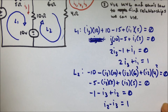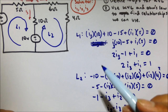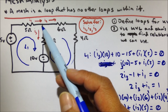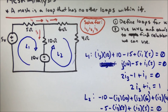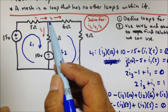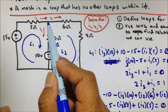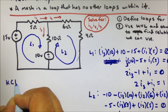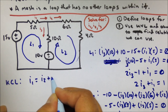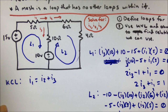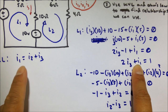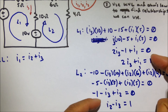We have another relationship we can use besides these two KVL loop equations — we also have Kirchhoff's current law. We can come up with a relationship between the three currents. The sum of currents going into a node must equal the sum of currents leaving the node. According to our drawing, I1 is going in, so that has to equal I2 plus I3. Now we can substitute I1 with I2 plus I3, giving us two equations with two unknowns.